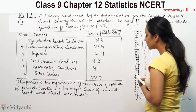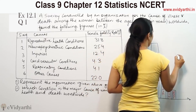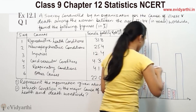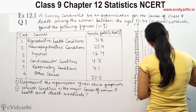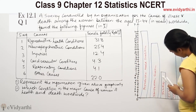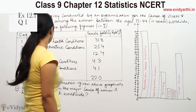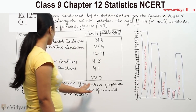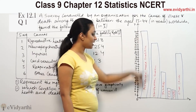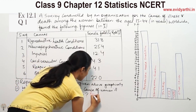The last category is other causes at 22%. 22 is plotted here. This is other causes. So this is the completed bar graph of this data. The question asks which condition is the major cause of illness and death among women worldwide. The major cause is reproductive health conditions.